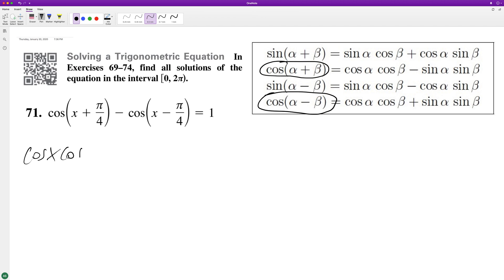Cosine X cosine pi over 4 minus sine of X sine of pi over 4. For the next one, minus, and then cosine, we're going to use the fourth equation. It's going to be cosine of X cosine of pi over 4 plus sine of X sine of pi over 4.